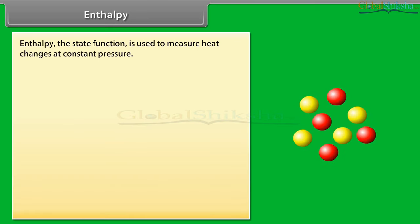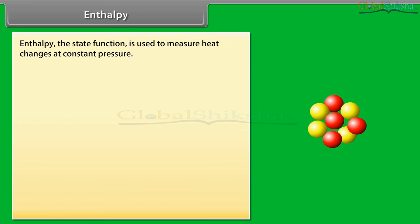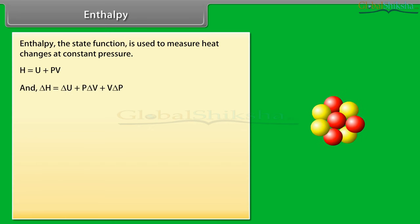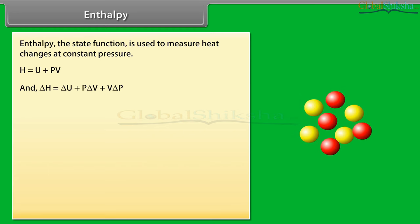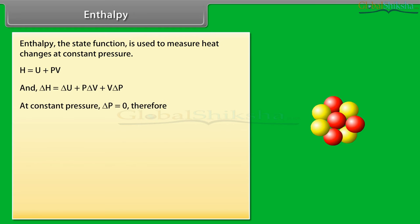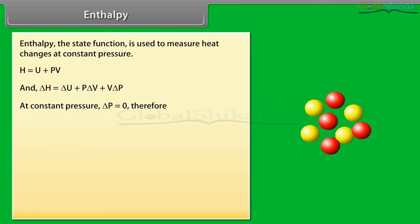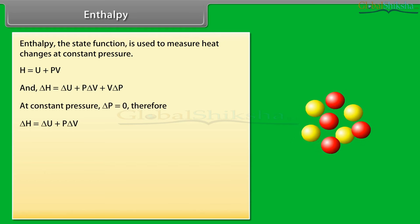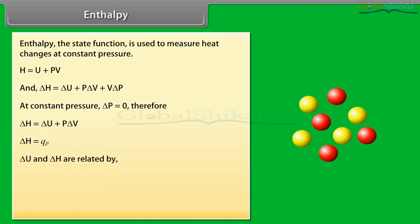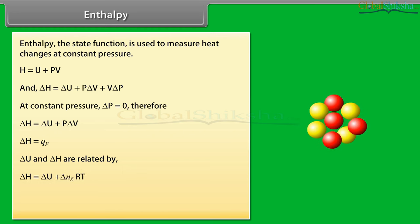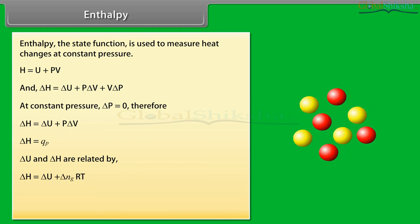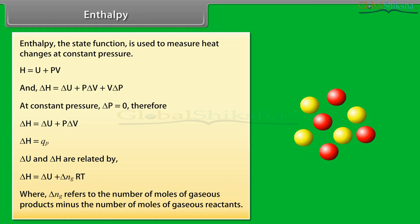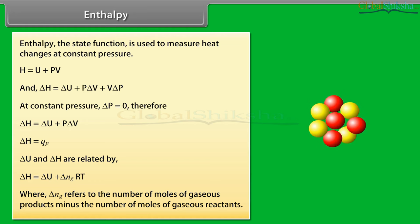Enthalpy: the state function used to measure heat changes at constant pressure. H = U + PV, and ΔH = ΔU + PΔV + VΔP. At constant pressure, ΔP = 0, therefore ΔH = ΔU + PΔV. This equation can be written as ΔH = Q_P. ΔU and ΔH are related by ΔH = ΔU + Δn_G RT, where Δn_G refers to the number of moles of gaseous products minus the number of moles of gaseous reactants.